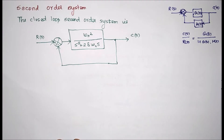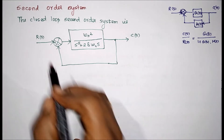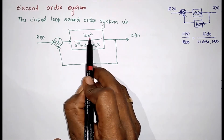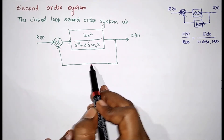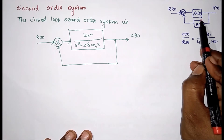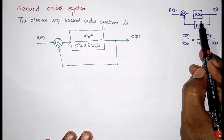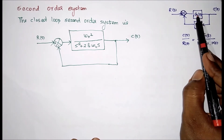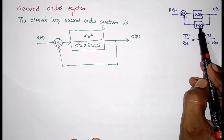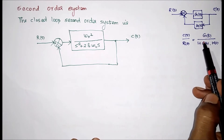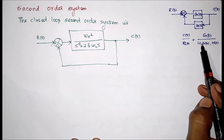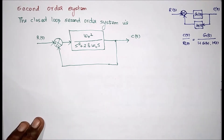In this video we are going to see about the second order system gain. This is the closed-loop second order system — the system gain with unity feedback. We already know how to reduce the feedback system: this is system gain G(s) and this is feedback gain. We can write the transfer function C(s) divided by R(s) equal to G(s) divided by 1 plus G(s) into H(s).